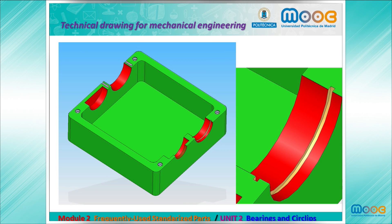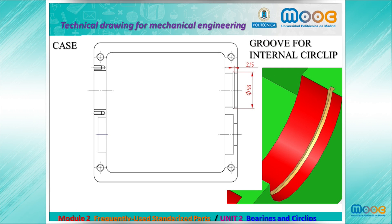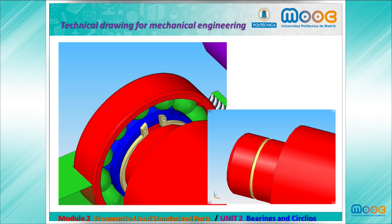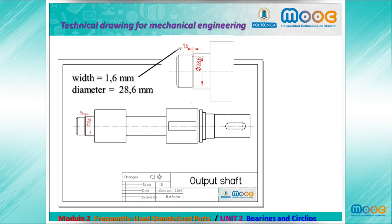Here we have the case with the corresponding groove for the internal circlip. The dimensions in the case for the internal circlip groove are width 2.15 and diameter 58. The shaft must also have a groove for the external circlip; in the drawing of the output shaft we can see groove width 1.6 and diameter 28.6.